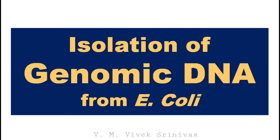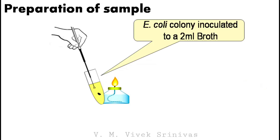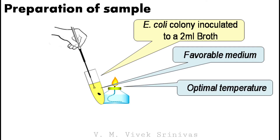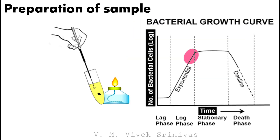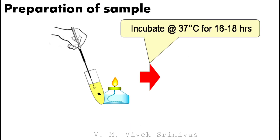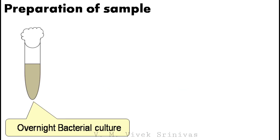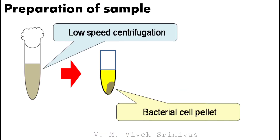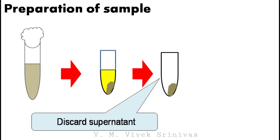Isolation of genomic DNA from E. coli bacterial cells. Preparation of sample: First, the bacterial colony is inoculated into bacterial broth. The organism should be grown in a favorable medium at an optimal temperature, and should be harvested in late log to early stationary phase for maximum yield. Following incubation, from the overnight bacterial culture, the bacterial cells are pelleted by low-speed centrifugation for 10 minutes. Discard the supernatant.